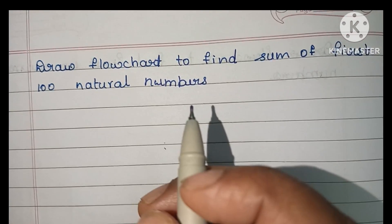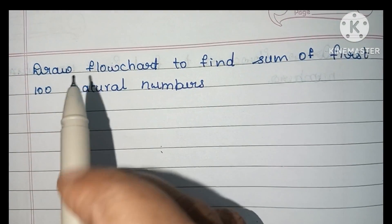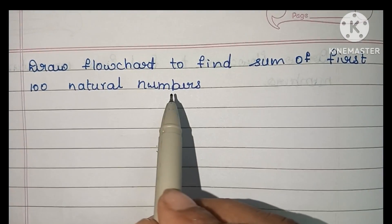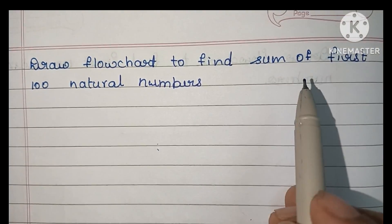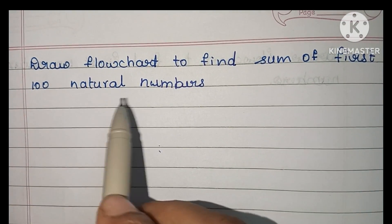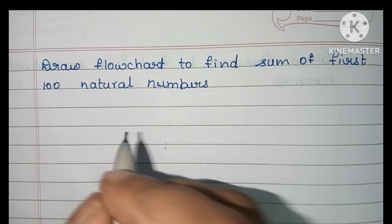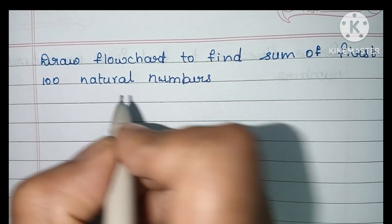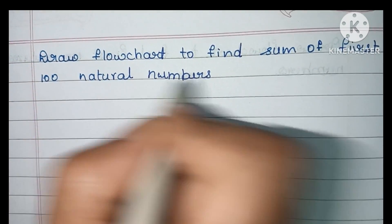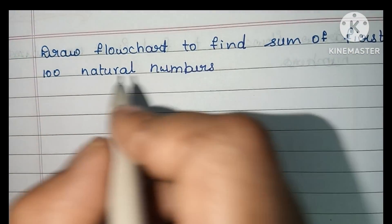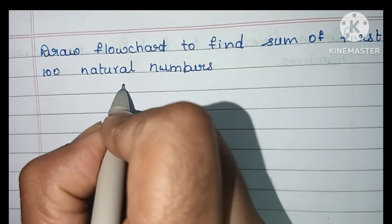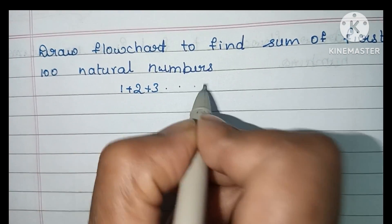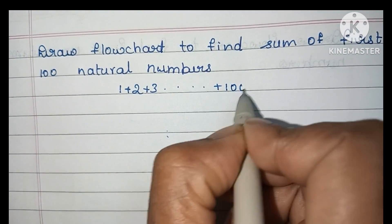In this video we're going to learn how to write a flowchart to find the sum of the first hundred natural numbers. A natural number is a positive integer starting with 1, 2, 3 up to infinity. Here we have to find the sum of first hundred natural numbers, that is 1 + 2 + 3 up to + 100.